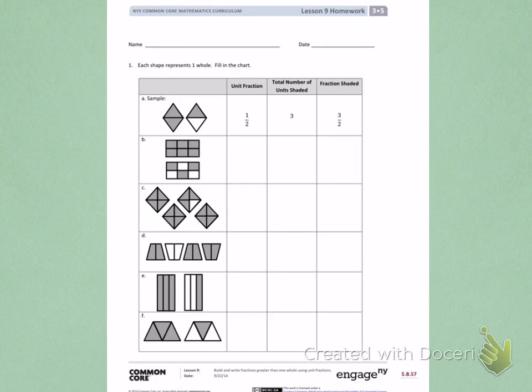This is Module 5, Lesson 9, Homework, Side 1. Today's objective was to build and write fractions greater than one whole using unit fractions. Number 1. Each shape represents one whole. Fill in the chart.